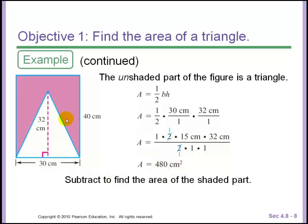So to find the total shaded amount, take the total rectangle, which is 1,200, subtract the unshaded area of 480, and that leaves you with your total shaded area. Our answer, then, is 720 centimeters squared. That is the shaded area.